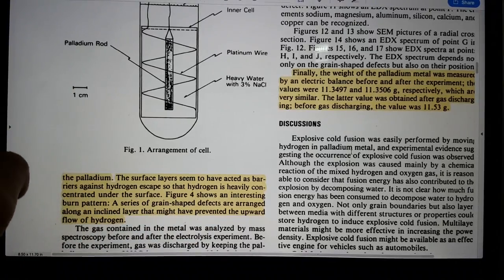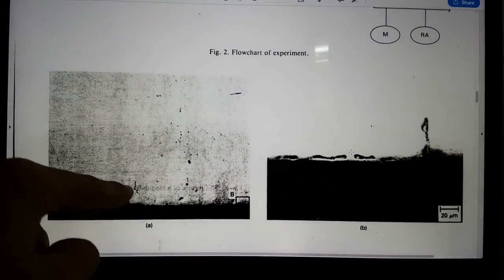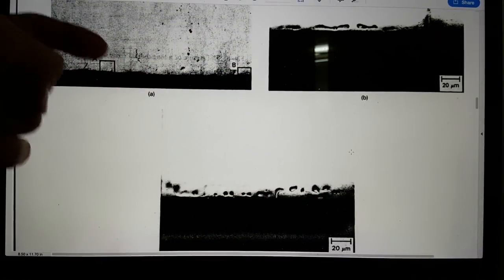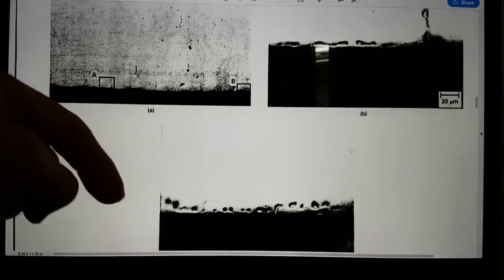Figure four shows an interesting burn pattern. A series of grain shaped defects are arranged along an inclined layer that might have prevented an upward flow of hydrogen. Okay so this is the real kicker in this presentation. So the first is these kind of surfaced defects. Now in my view I'm kind of in line with Shoulders when it gets to the impedance mismatch between the metal which it likes to be in and the electrolytic solution of deuterium and sodium chloride. It doesn't like to go across there. The active agent dishevels and then the disheveled fragments do their work on the boundary layer. This is the same as it would occur between two grain boundaries.